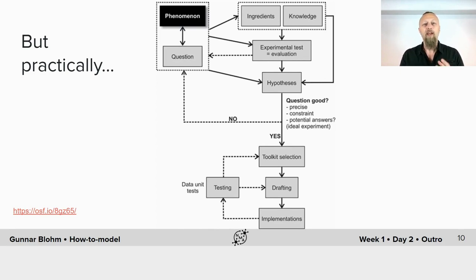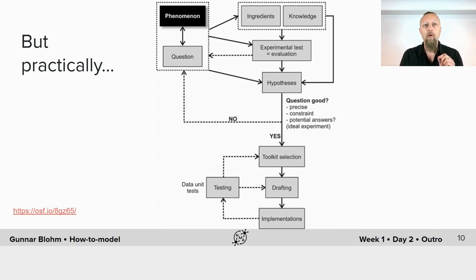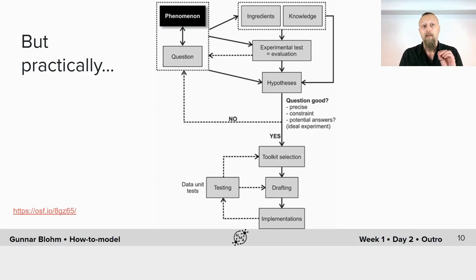There is a constant back and forth in framing the question — between researching the ingredients, the background knowledge, coming up with good hypotheses, trying to figure out what a good question is. Has this already been done in the field? Is this meaningful in terms of the outcome? And only when we have a good question that is precise and concrete can we move on to the actual modeling exercise, where we start drafting based on the toolkit we have selected, implementing the model, along the way testing each element in unit tests. And even there, it can happen that our initial draft was wrong and we have to revise it, because the implementation does not show the behavior we expect. Maybe we have even selected the wrong toolkit and so we have to go back and forth.